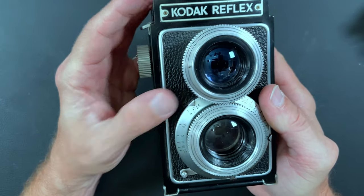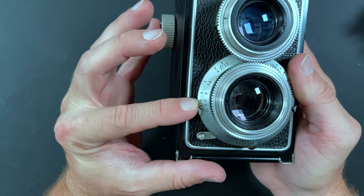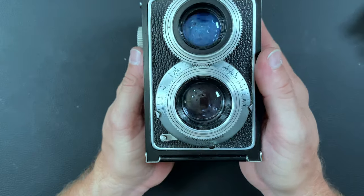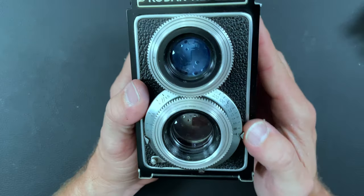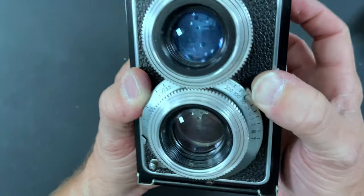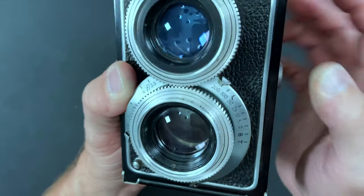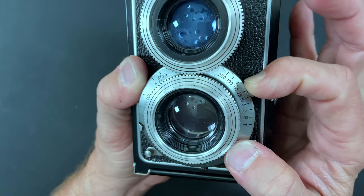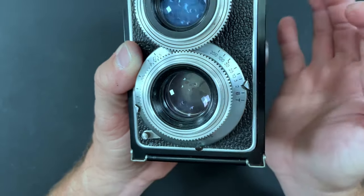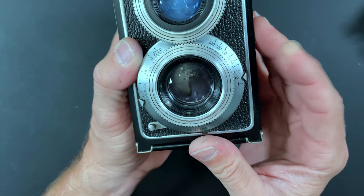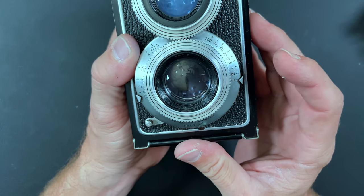It goes anywhere from a 3.5 to a 22 aperture. And for the shutter speed, it goes from 200 down to 2 seconds. It also has bulb and timer.